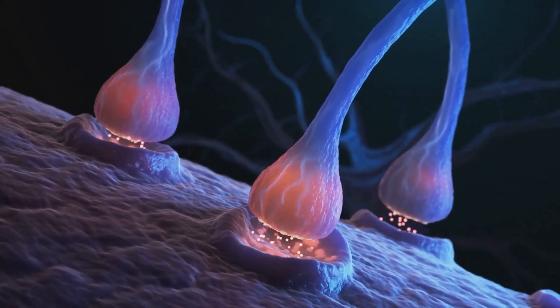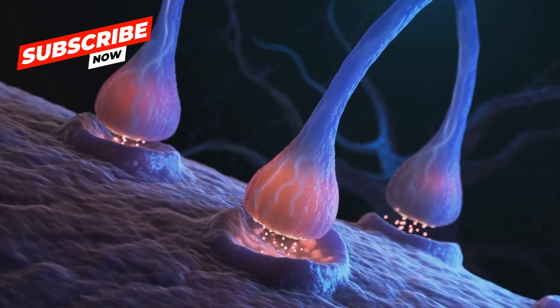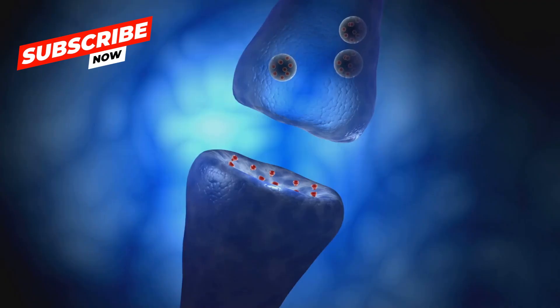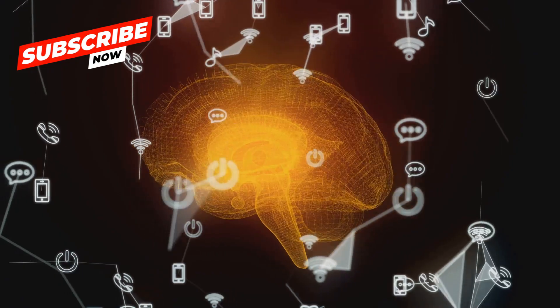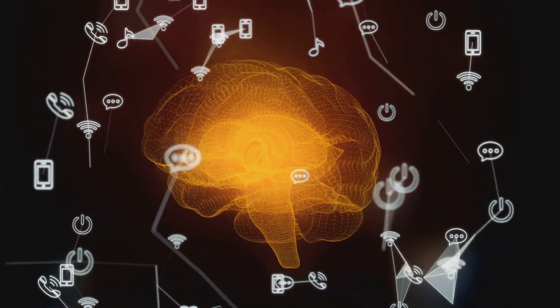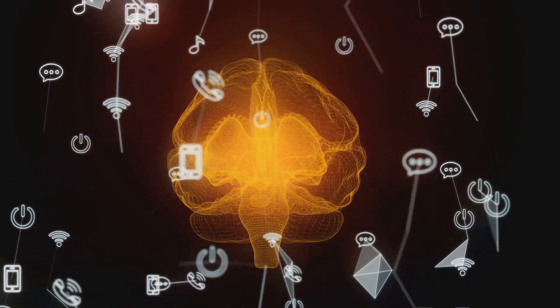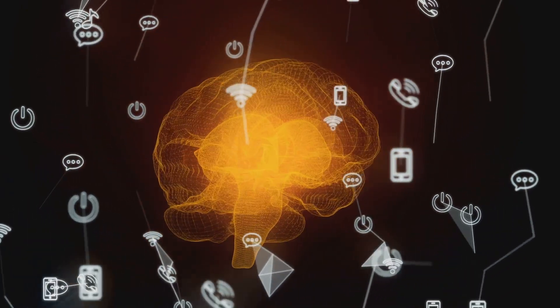Picture this. Each neurotransmitter is like a key, and each neuron a lock. When the key fits the lock, it turns, and a message is passed on. This is how your brain communicates with billions of keys turning billions of locks every second of every day.